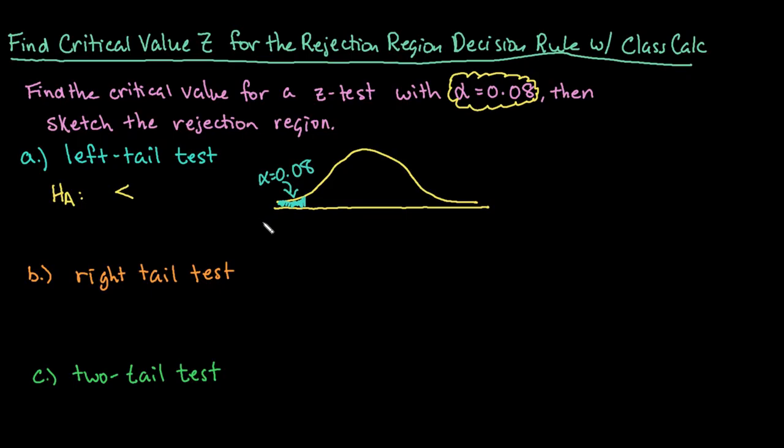So depending upon your textbook, your critical value can be denoted as zc, z star, or z naught. So those are all of the different symbols that I have seen in textbooks. You may have something different, but depending upon what your textbook author decides to use, this could change. Okay, they all mean the same thing. It's just your critical value for where we are going to reject or fail to reject.